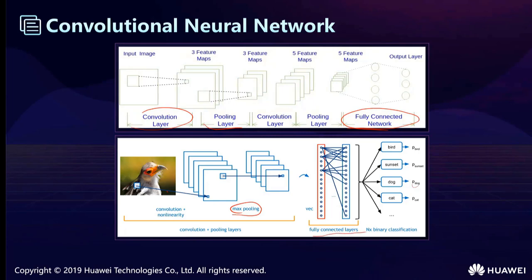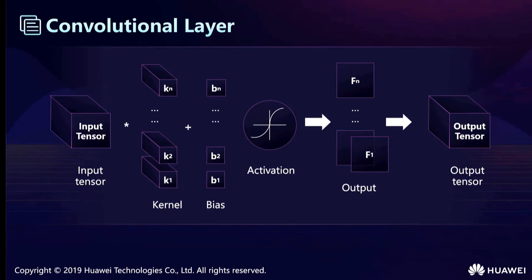The fully connected layer then outputs results with many labels — whether it is a bird, dog, or cat. In the convolutional neural network structure we can see it has convolutional layers, pooling layers, and fully connected layers. Let's take a closer look at the convolutional layers and multi-kernel convolution.